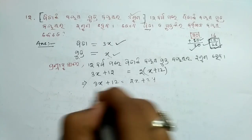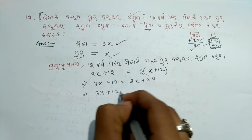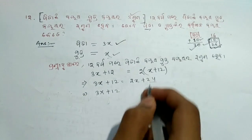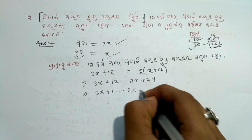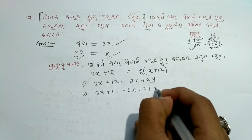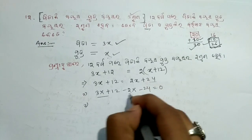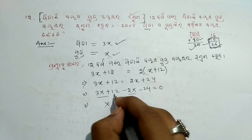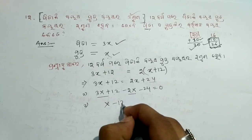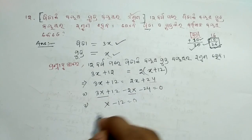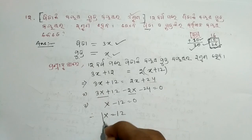Father's age: 3x plus 12. Son's age equation gives minus 2x minus 24 equal to 0. So 3x minus 2x gives x, and 12 minus 24 gives minus 12 equal to 0.